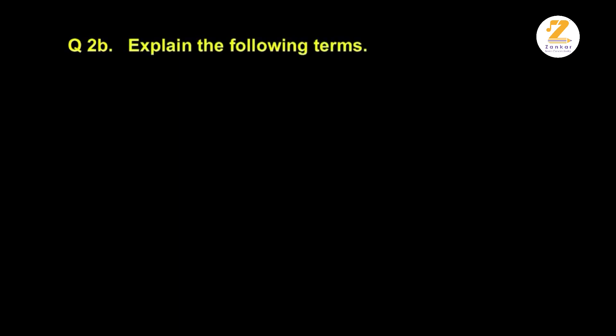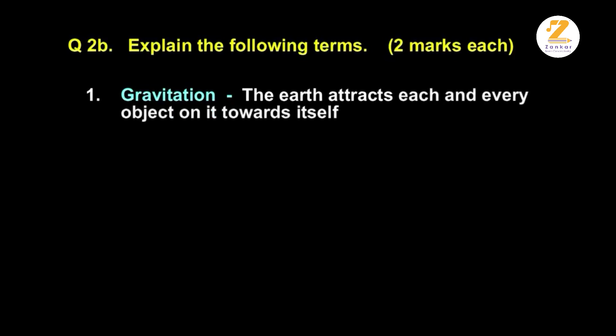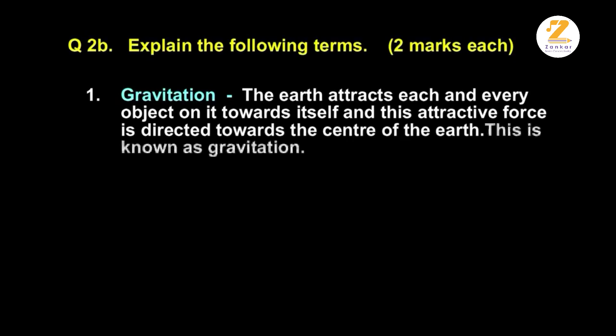Explain the following terms, two marks each. Gravitation. The earth attracts each and every object on it towards itself and this attractive force is directed towards the center of the earth. This is known as gravitation.